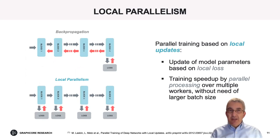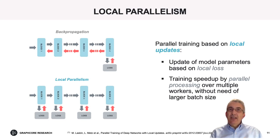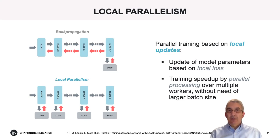Local parallelism is another attractive direction for using an increasingly large number of processors to speed up training efficiently. The key improvement is that local updates of different blocks of the network based on a local loss break the constraint of backpropagation, which conventionally requires the different blocks of the deep model to be computed sequentially and the parameter updates to be done sequentially through back propagation. With local parallelism relying on local losses, the different blocks can instead be updated in parallel, potentially on parallel workers.